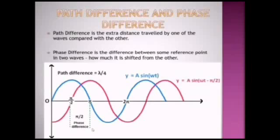How to differentiate between path difference and phase difference? Path difference is the extra distance traveled by one wave compared with the other. In these two sinusoidal waves, the path difference is lambda by four. Phase difference between these waves is pi by two, which is 90 degrees, because pi is 180 degrees.